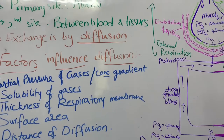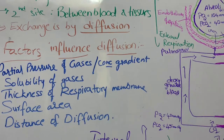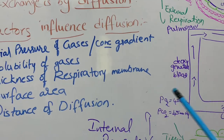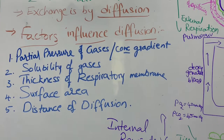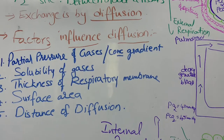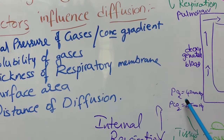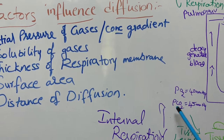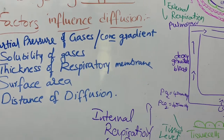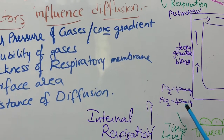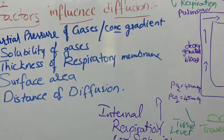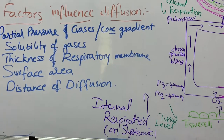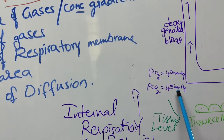Partial pressure is denoted as 'p', where p means partial. So pO₂ means partial pressure of oxygen and pCO₂ means partial pressure of carbon dioxide. The units for partial pressure are mm Hg — millimeters of mercury, where mercury is denoted by the symbol Hg.